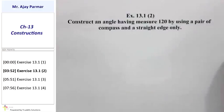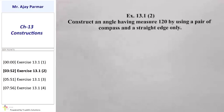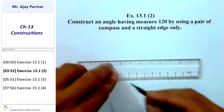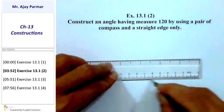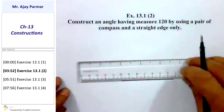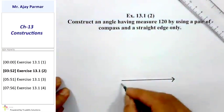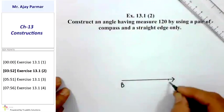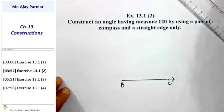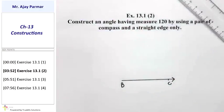Exercise 13.1, question number 2. Here we are expected to draw 120° without using a protractor — using only a compass and straight edge. We are expected to draw a ray; let us call that ray BC, where B is the initial point. Using compass and any arbitrary radius, I will select B as the center.